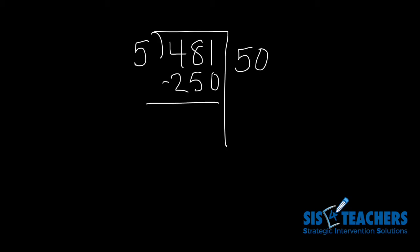Once I subtract this, I know that I'm left over with the difference of 231. I can't put another group of 50 in there because that would give us another 250, which would be over the remainder of what we have left.